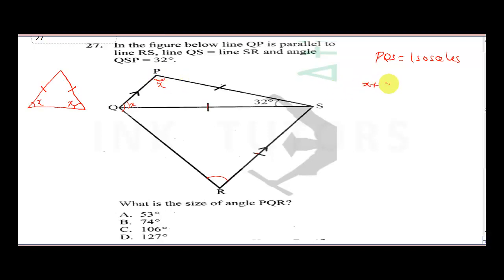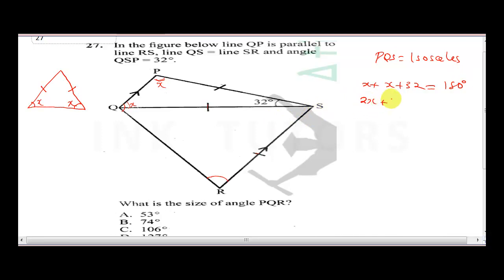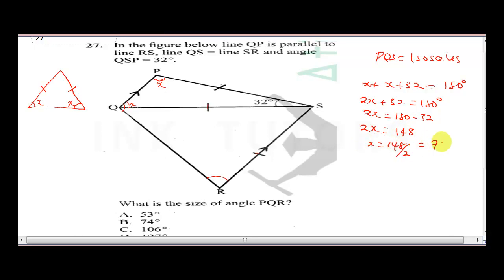From 2x plus 32 equals 180, we get 2x equals 148, so x equals 74 degrees. Noticing the parallel lines, the alternate angles mean the angle on the other side is also 74 degrees.